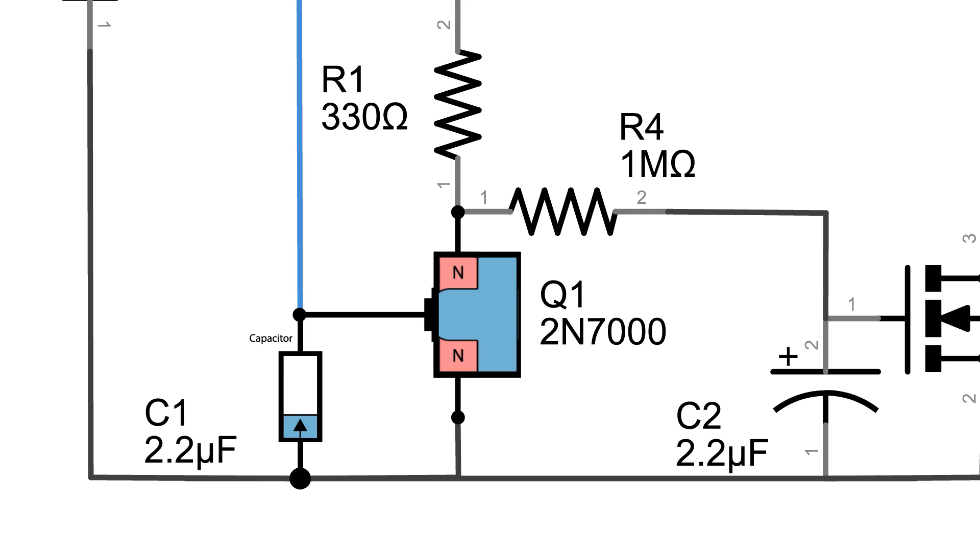Back to the gate. The channel in the MOSFET gets enhanced and depleted at the same rate that the capacitor charges and discharges. So as the charge in the capacitor increases, the channel gets bigger, allowing more current to flow through the MOSFET, and the LED slowly gets brighter, eventually reaching its full brightness.